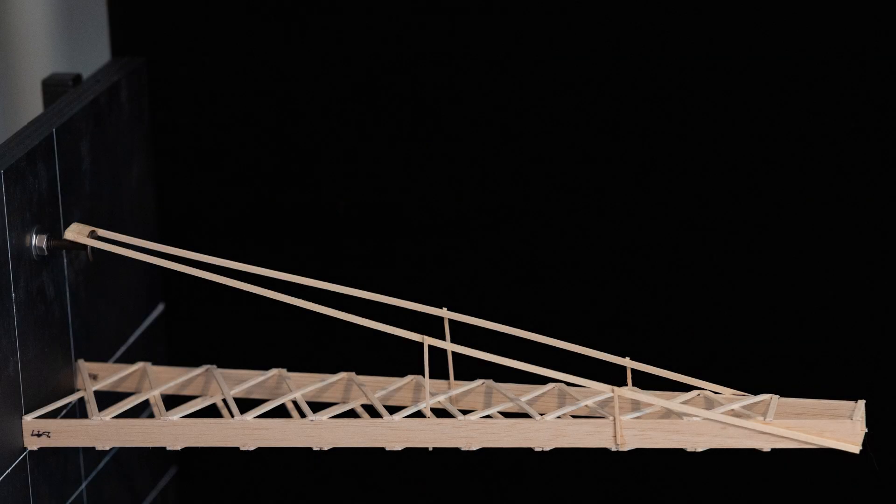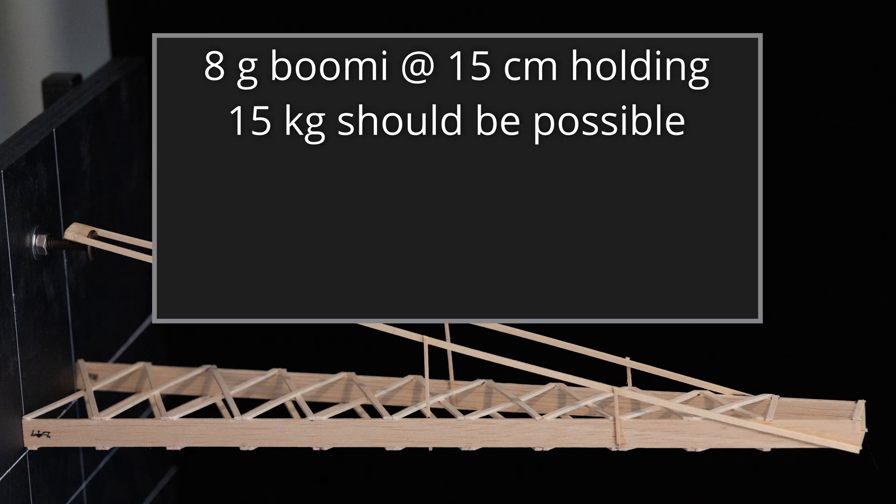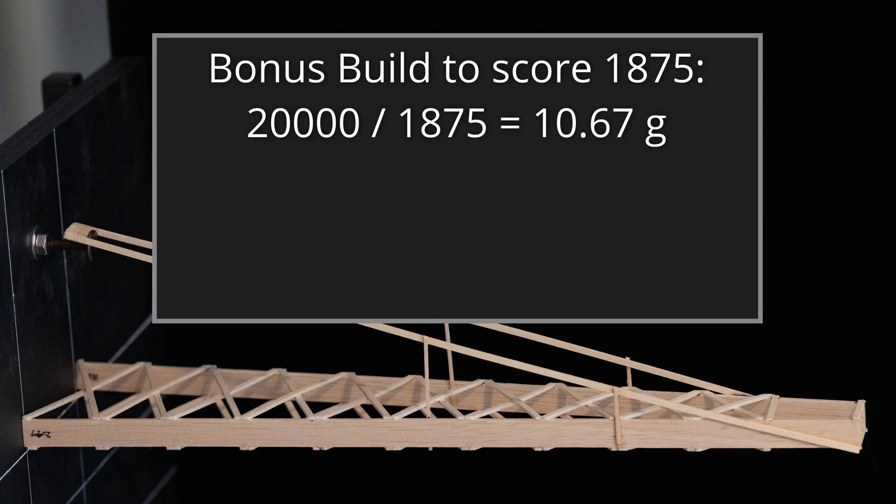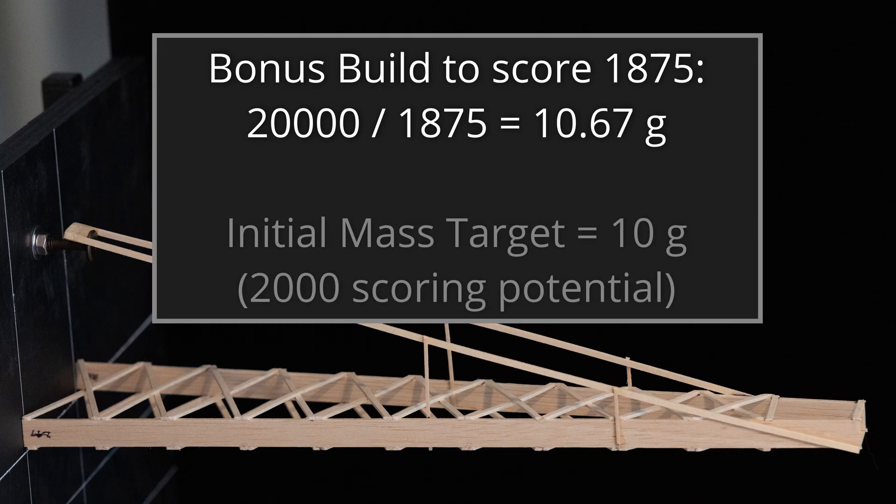With all that background out of the way, let's get started on how I approached my first build. From my previous experience, I knew that an 8 gram 15 cm tall Boomi that held 15 kg should be possible. That would be an 1875 score this year or 15,000 divided by 8. The equivalent bonus build with an 1875 score would be 10.67 grams. To really make the bonus design attractive, it would have to have a higher scoring potential to account for the need to also have to hold the entire 15 kg. With that in mind, I set my mass target at 10 grams.